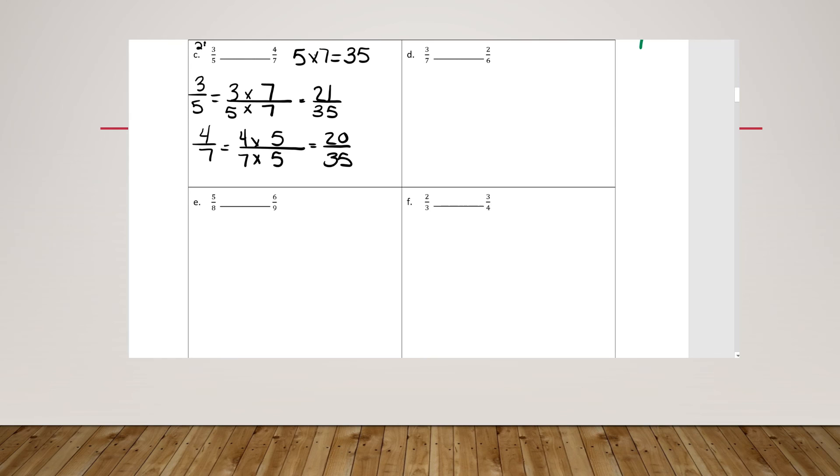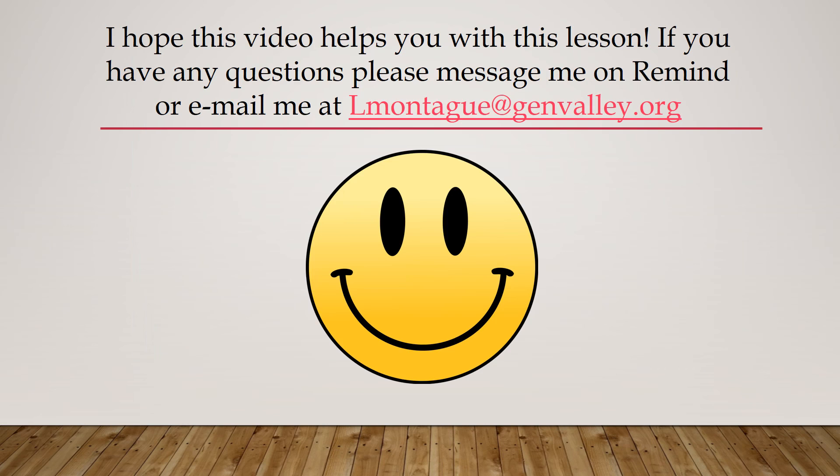And so now I have twenty-one thirty-fifths. So when I look at the new fractions that I have, my denominators are the same. So I only have to compare the top number, the numerator, and twenty-one is greater than twenty. Thank you very much.